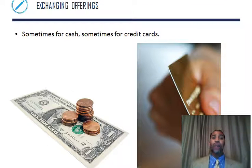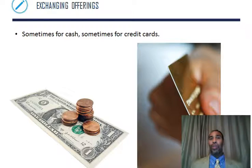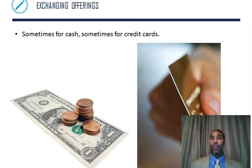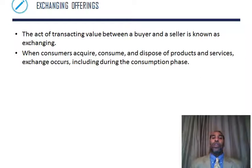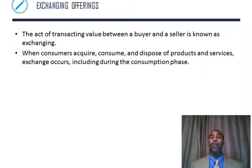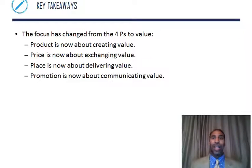Exchanging offerings — typically it's going to be for cash or credit card. You could go back to how it is in other civilizations and use the barter system: I give you 10 cantaloupes and you give me back three shirts — I have a farm and you have sewing skills, so we make an exchange. But typically in the United States it's mostly cash or credit cards. The act of transacting value between a buyer and a seller is known as exchanging. When consumers acquire, consume — you get it and use it — and dispose of products and services, the exchange actually occurs during and including the consumption phase.